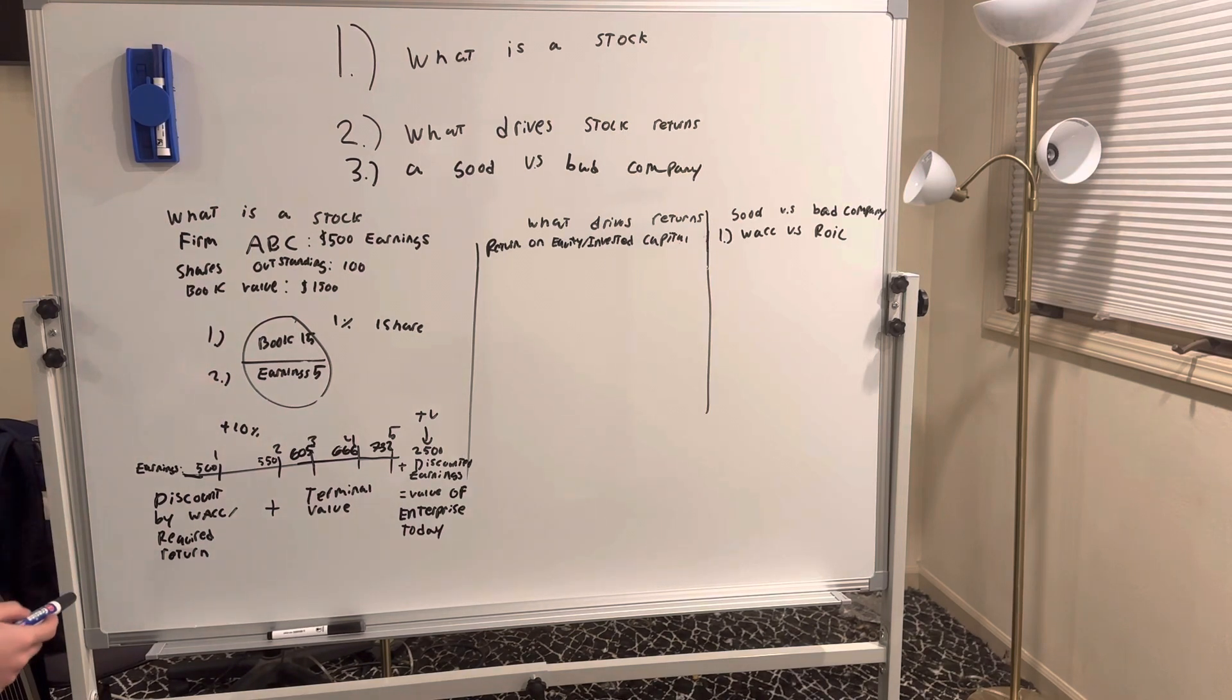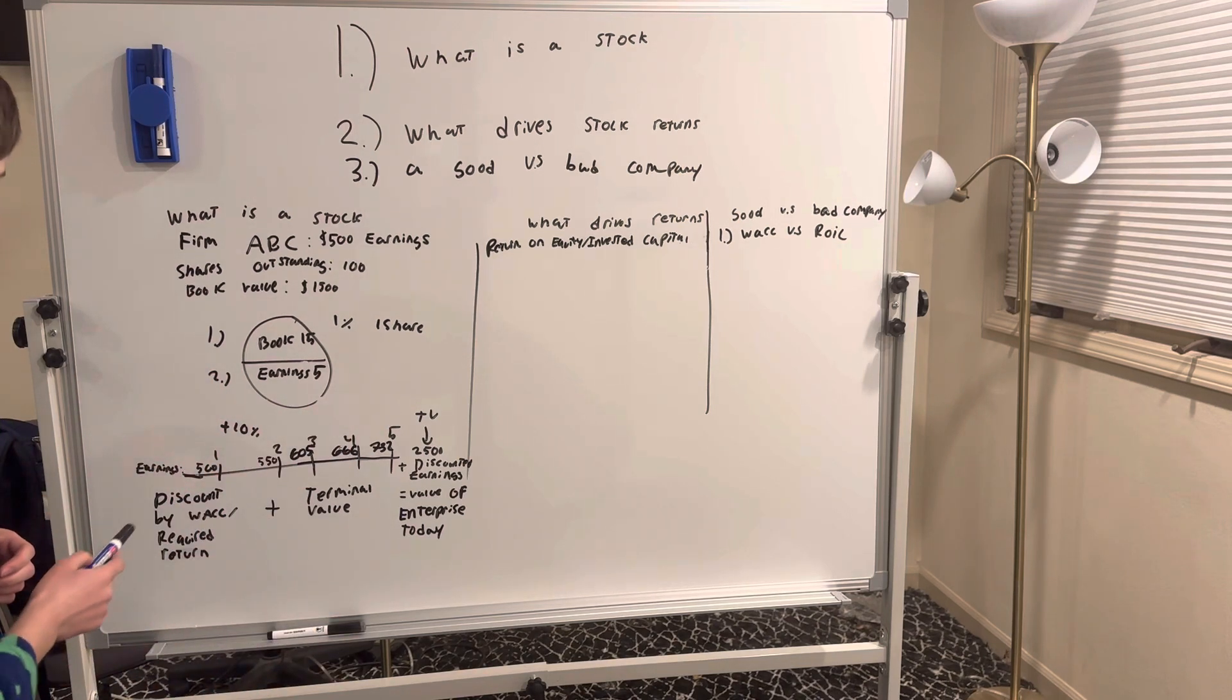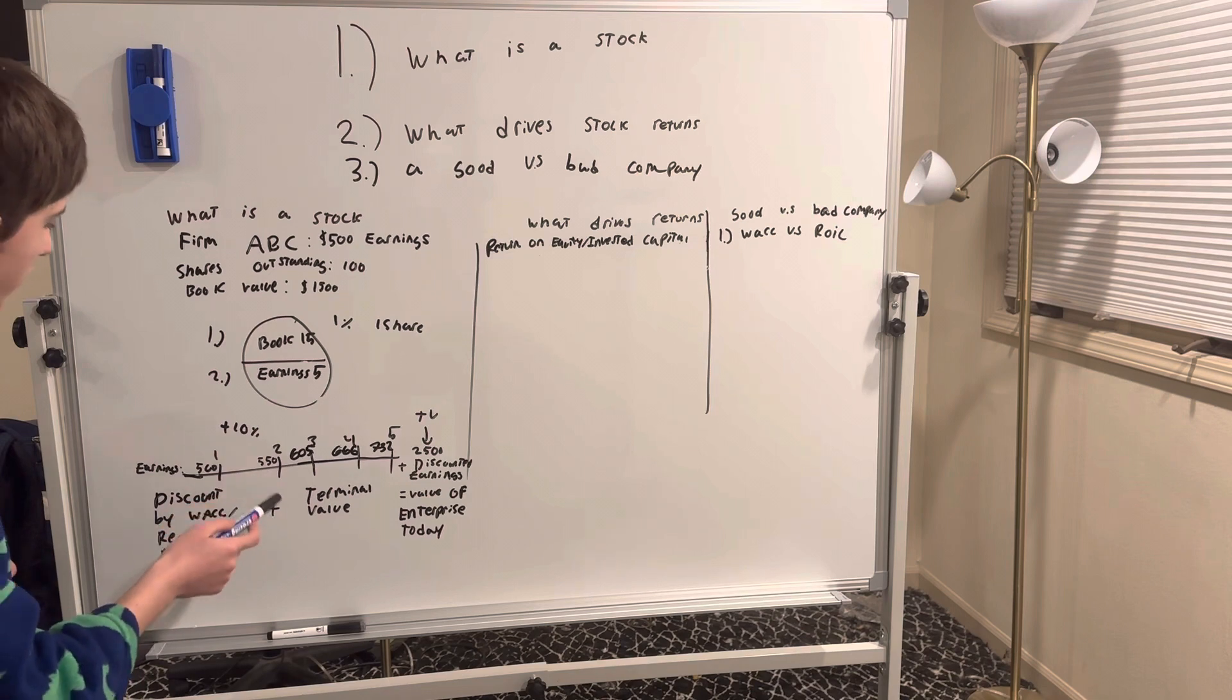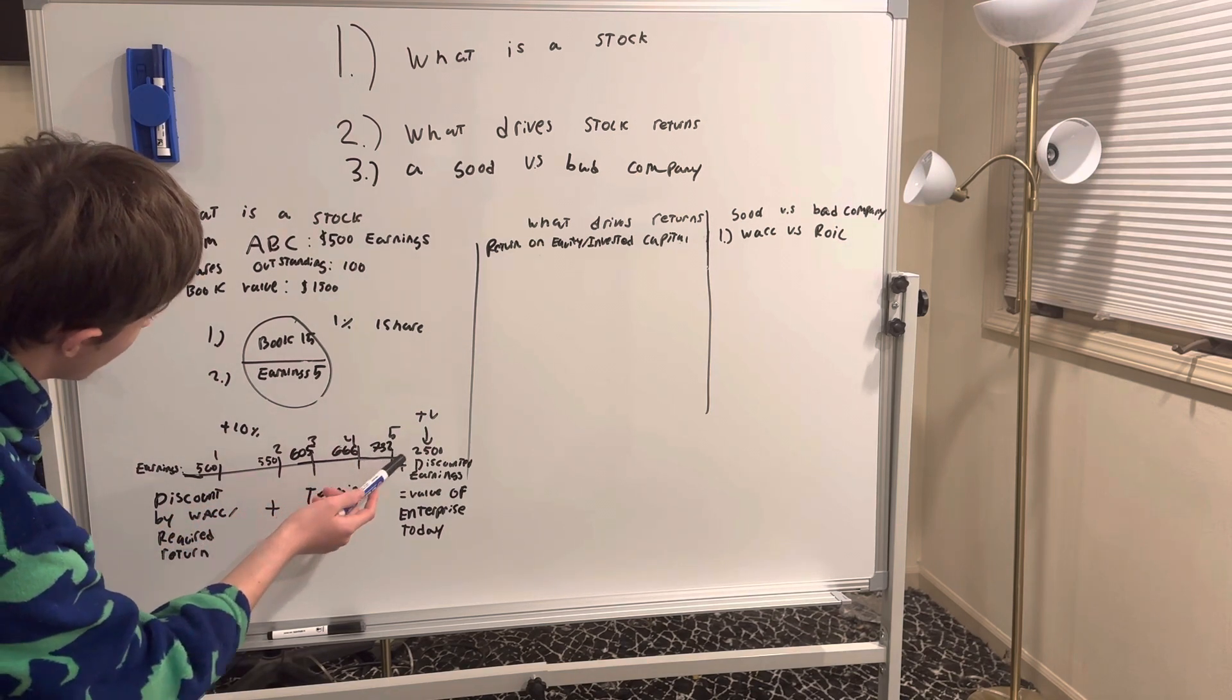If we were to apply a growth rate to these earnings, let's say 10% a year: year 2, $550; year 3, $605; year 4, $666; year 5, $732.